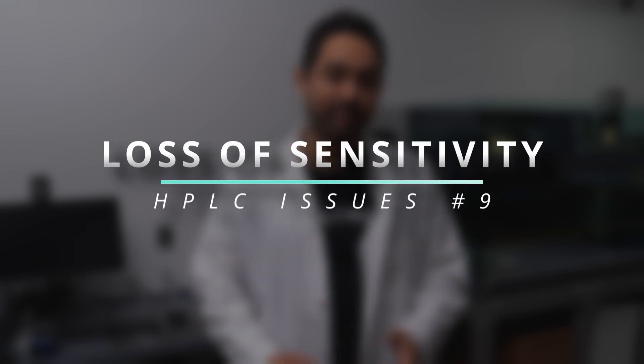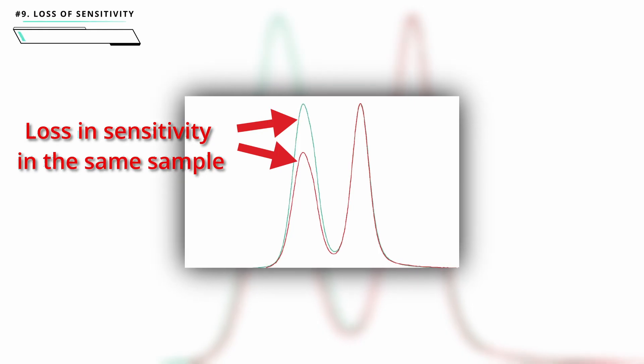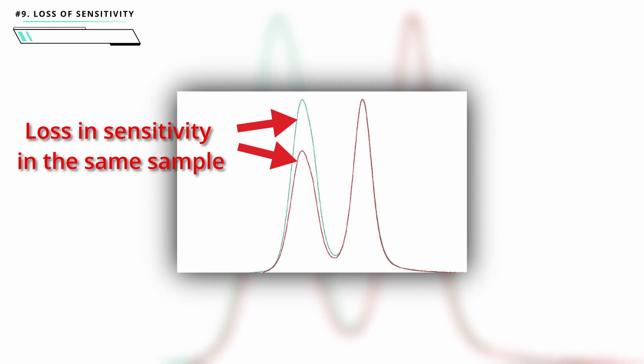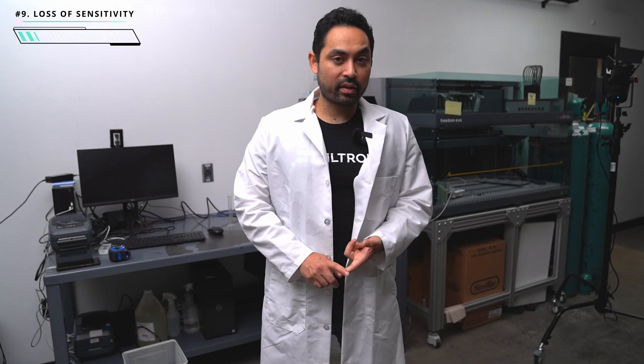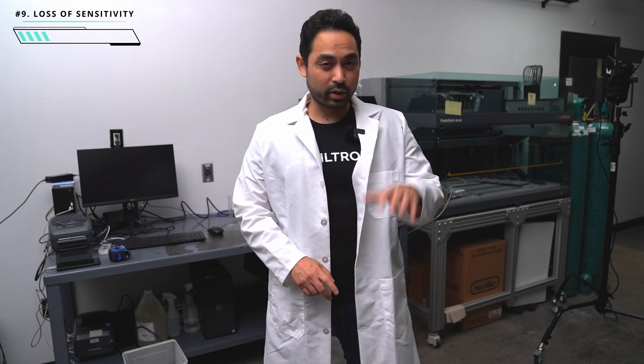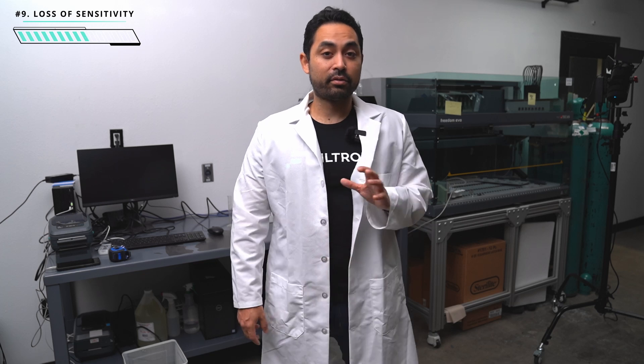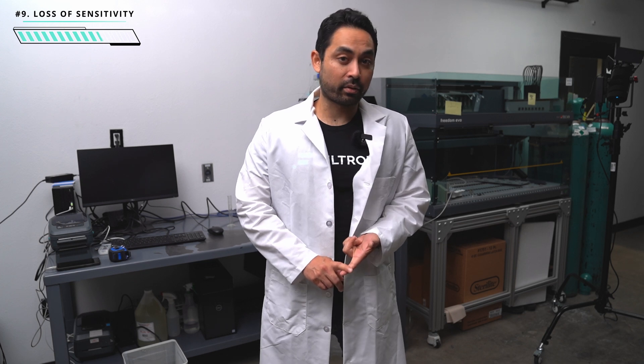Number nine is no peak or loss of sensitivity. If you're losing your peak, it could be a leak somewhere or a bad rotor in the injector, meaning you're losing your compound altogether. Other causes include a failing detector or lamps that need to be replaced — which would more likely present as loss of sensitivity. You might also be using the wrong type of detector for the assay, such as using a PDA detector for sugars or organic acids that have no chromophore, so nothing shows up.